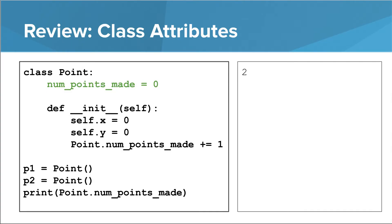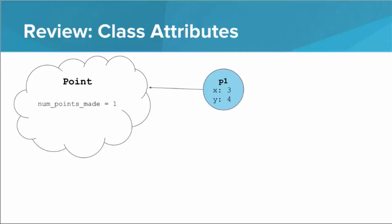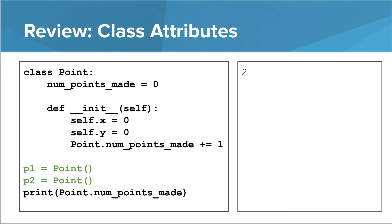Then we have class attributes. Class attributes are at the class level. Rather than each instance getting its own attributes, every instance shares the same single attribute. In the point class, we had the example numPointsMade. It starts off at zero and every time a new point is created, we increment it by one. The point class keeps track of this one attribute, and we can access it by saying Point.numPointsMade, or through individual instances like p1.numPointsMade or p2.numPointsMade — these all reference the same attribute.